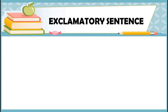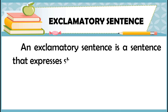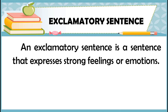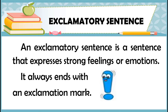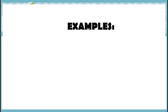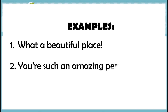Do you have an idea of what an exclamatory sentence is? An exclamatory sentence is a sentence that expresses strong feelings or emotions, and it always ends with an exclamation mark. So when we say the following examples, we should say it with strong feelings — like: "What a beautiful place!" and "You're such an amazing person!"